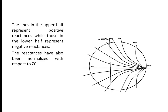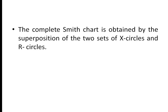The lines in the upper half represent positive reactances, while the lower half lines represent negative reactances. The reactances have also been normalized with respect to Z naught. So the complete Smith chart is obtained by a superposition of two sets of circles — the X circles, that is reactance circles, and the R circles, that is resistance circles.